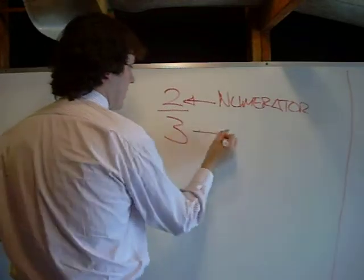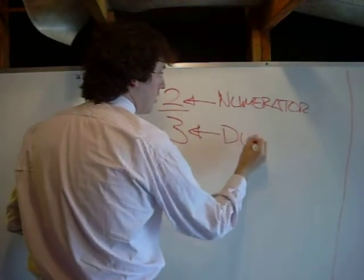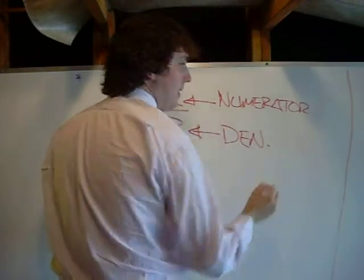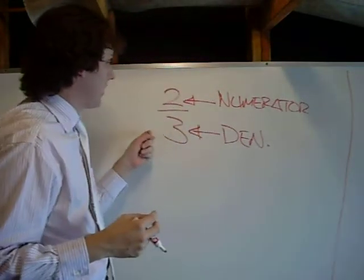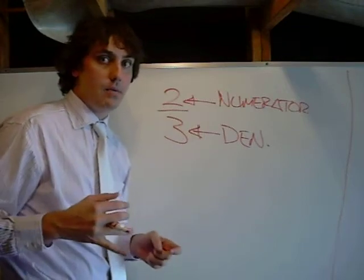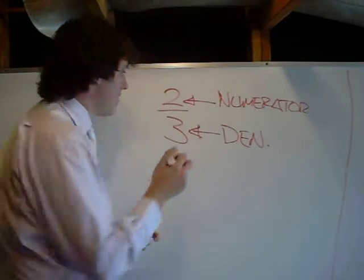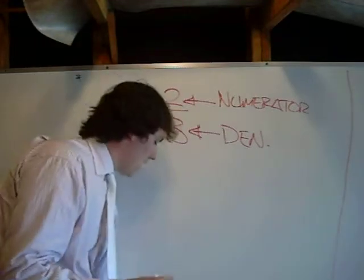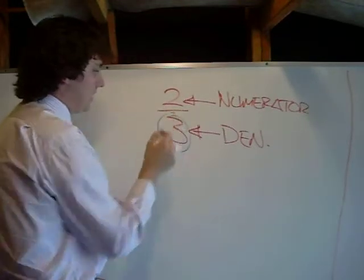On the bottom is not the terminator, but the denominator. So whenever you hear anyone talk about the denominator, they're talking about the bottom number. Now when we're adding and subtracting fractions, the things that we have to make sure are the same are that whatever we're adding and subtracting, the denominators must be the same.